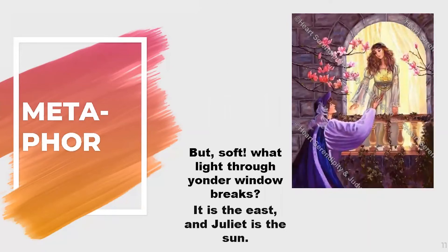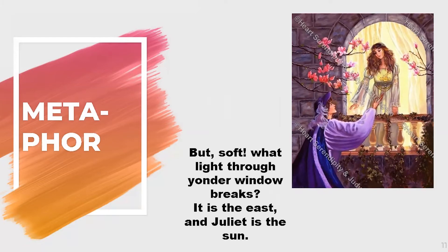Here is a famous example from the balcony scene in Romeo and Juliet: 'But soft, what light through yonder window breaks? It is the east, and Juliet is the sun.' Romeo compares Juliet to the sun — not only to describe how radiantly beautiful she is, but also to convey the full extent of her power over him. His life revolves around Juliet just as the earth orbits the sun.